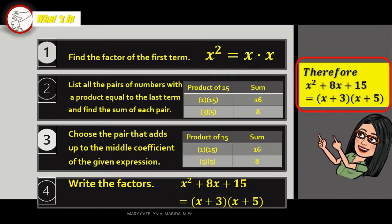Therefore, X squared plus 8X plus 15 is equal to the quantity of X plus 3 times the quantity of X plus 5. You got it!